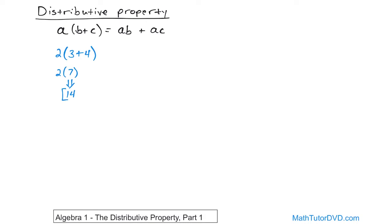Now, according to the distributive property, this whole thing can also be written as two times three, because this two gets applied to the three — multiplied because they're multiplied — two times three, and then also two times four. Now notice we have addition but also multiplication. The multiplication always comes before the addition. So two times three gives you six, the plus comes along for the ride, two times four gives you eight, and then finally you do six plus eight, which is 14. So no matter how you do it — whether you do inside the parenthesis first and then multiply, or use the distributive property — you get 14. These are equivalent.